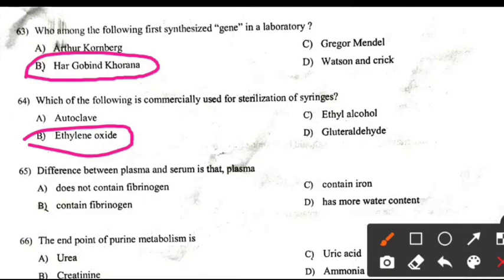Difference between plasma and serum is that plasma contains: Right answer B — the content of fibrinogen.